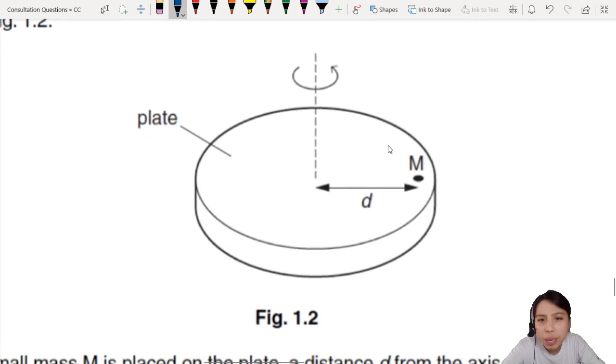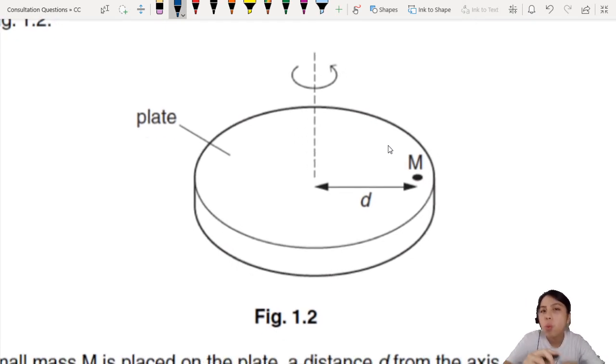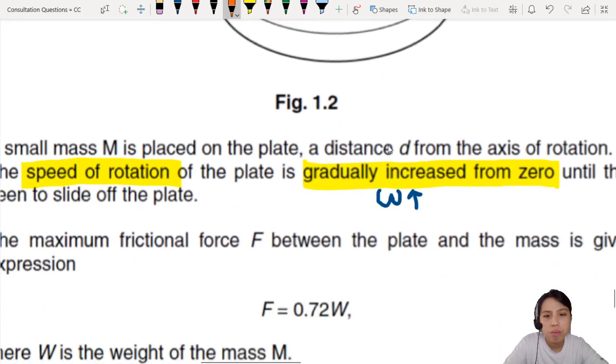Determine the maximum RPM revolutions per minute for mass to remain on the plate. When we have this picture, the question you want to think about is what is keeping that mass rotating in a circular path? Mass wants to go in a straight line.